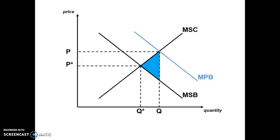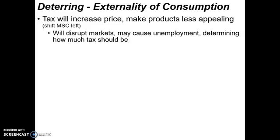How do we minimize that welfare loss and deter the consumption of demerit goods? The first option is a tax. The tax will increase the price and make the product less appealing. The problem with a tax is it's going to disrupt certain markets. For example, if we tax cigarettes, cigarette firms will be disrupted — it will be more challenging for them to sell their products, they may lay people off, and politicians representing areas with cigarette production may be reluctant to impose the tax.